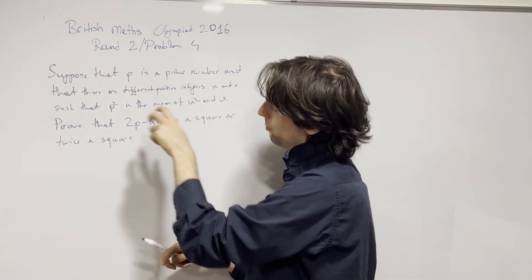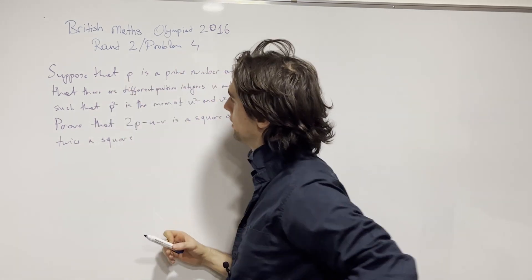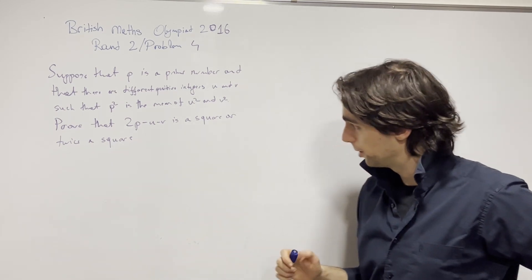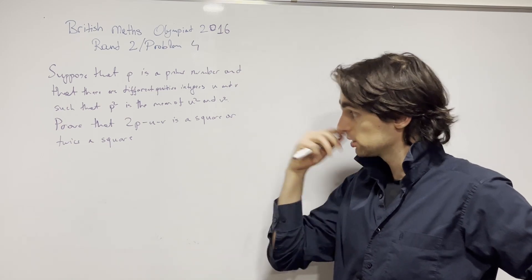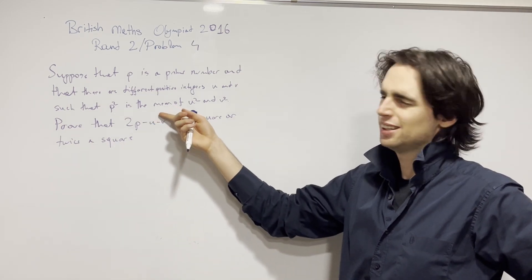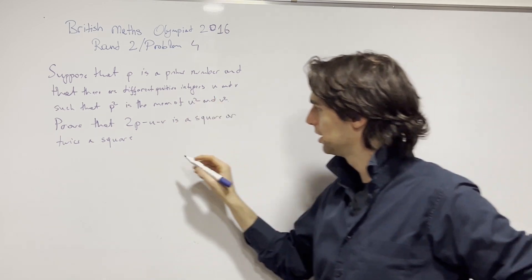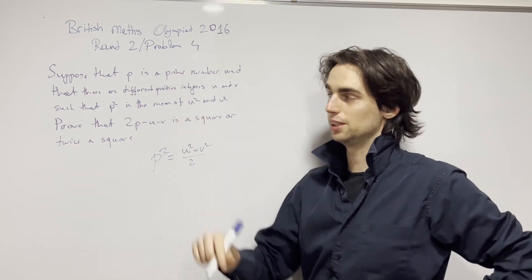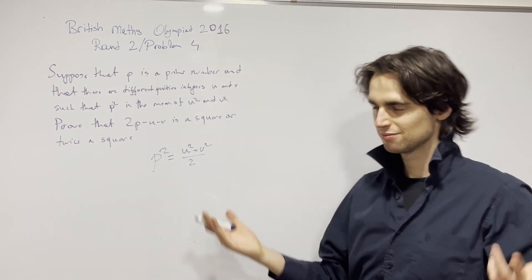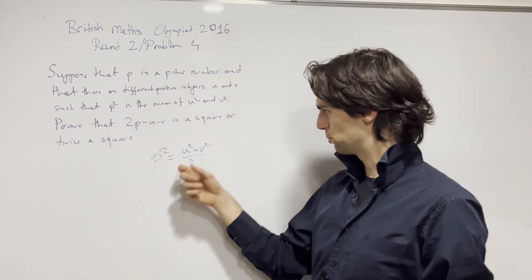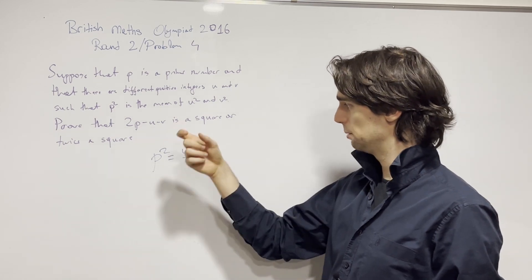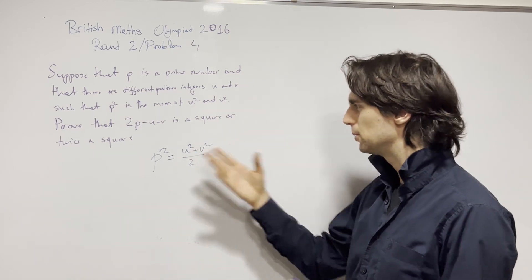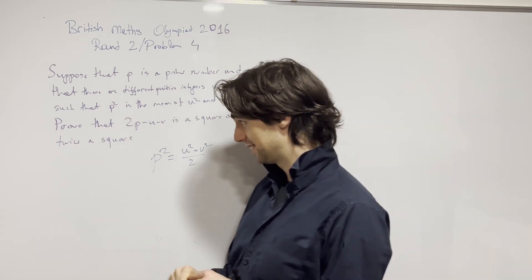Let's look at this problem. Suppose that p is a prime number and that u and v are different positive integers. Then p squared is the mean of u squared and v squared. Prove that 2p minus u minus v is a square or twice a square. In plain math: p² = (u² + v²) / 2, and p is prime.